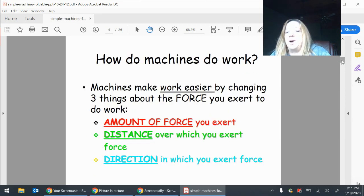How do machines do work? Well, machines make work easier by changing three things about the force you exert to do work: the amount of force you exert, the distance over which you exert force, and the direction in which you exert force.